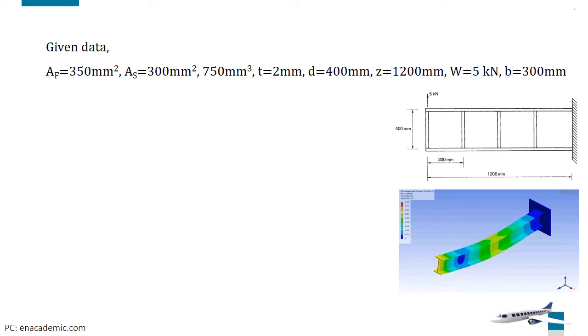Depth of the beam, d is equal to 400 mm, and length of the beam, z is equal to 1200 mm. Load intensity, W is equal to 5 kN, and breadth, b is equal to 300 mm.